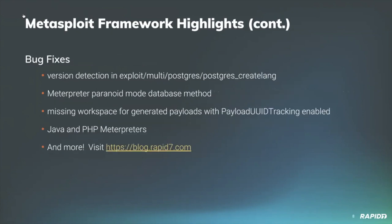For bug fixes: B Coles fixed a version detection issue in the Postgres create lang exploit module and also improved the version detection. Community contributor Brimstone provided a fix for interpreter's paranoid mode by adding a missing database method. Our own Matthew Kino fixed an issue with payload generation where, when payload UID tracking is enabled, payloads would be assigned to non-existent workspaces at console startup. And Brendan Waters updated payloads to pick up fixes for both the Java and PHP interpreters.